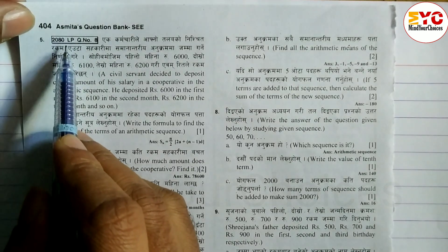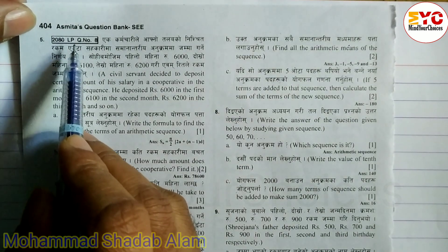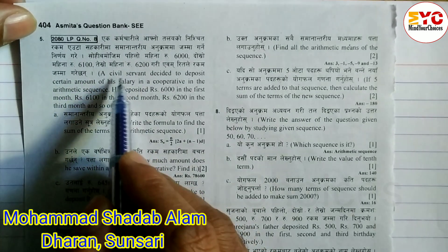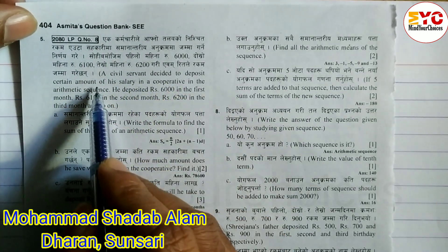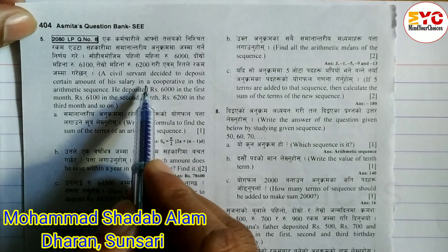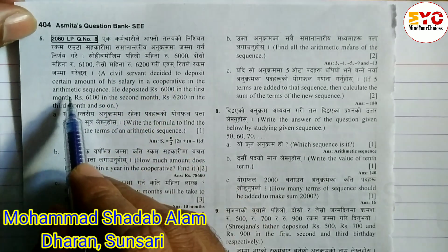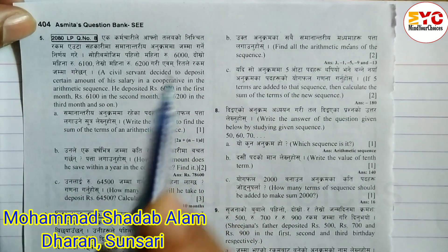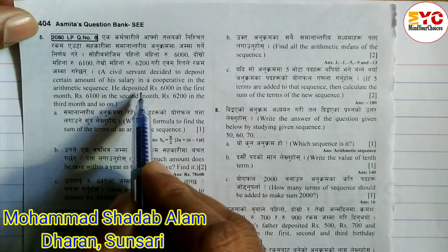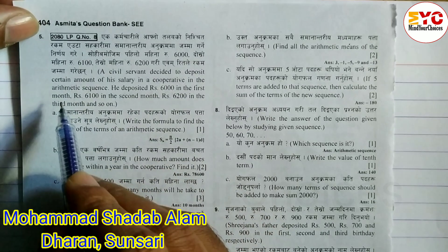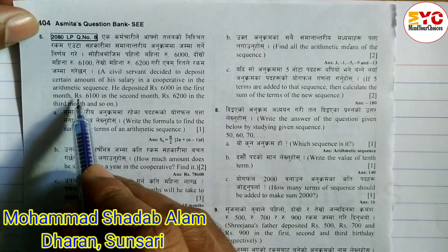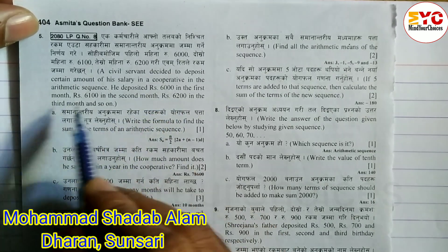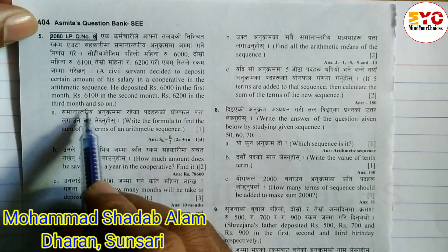This question is from 2018 in Lumbani province. A civil servant decided to deposit a certain amount of his salary in a cooperative as an arithmetic sequence. He deposited Rs. 6,000 in the first month, Rs. 6,100 in the second, and Rs. 6,200 in the third. The difference is equal, so this is an arithmetic sequence.